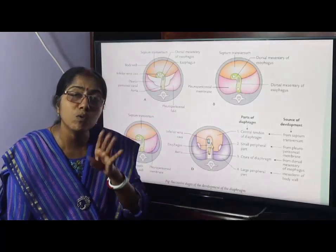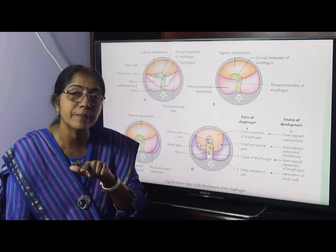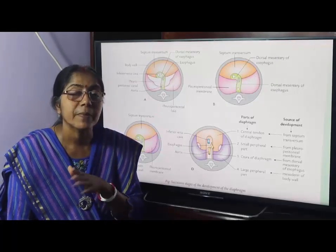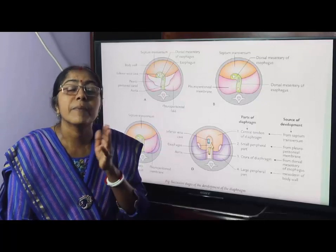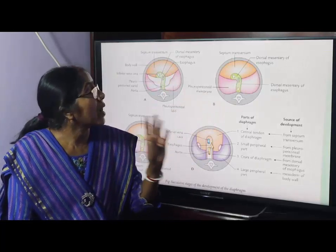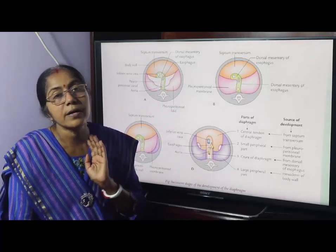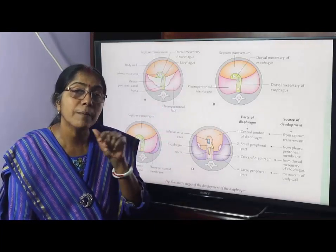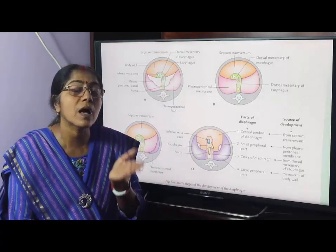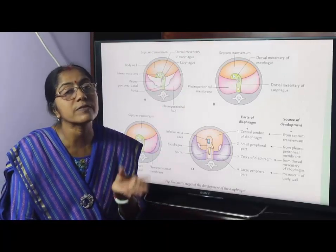The diaphragm develops from four sources. The central tendon develops from the septum transversum, which is a mesodermal bar of tissue. A small peripheral part develops from the pleuroperitoneal membrane. The large peripheral part develops from the mesoderm of the body wall. The right and left crura develop from the dorsal mesentery of the esophagus.